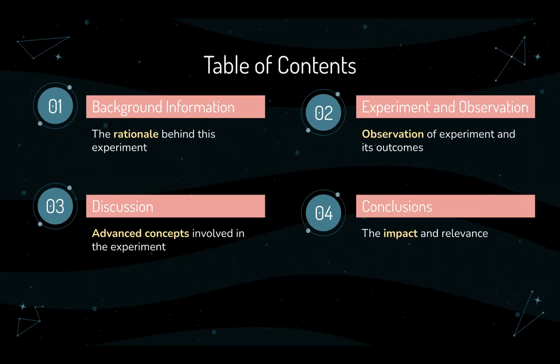Table of contents. This presentation is organized into four main parts. The first is background information — the rationale behind this experiment and the reasons why we want to do it. The second is the actual experiment and observation of its outcomes. Third is the discussion of advanced concepts involved in the experiment. And finally, we have the conclusions, or the impact and relevance of this experiment.